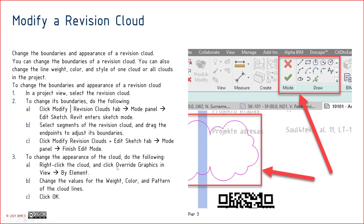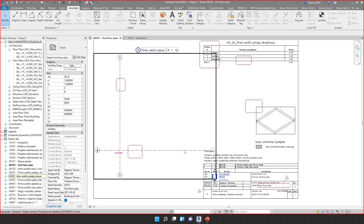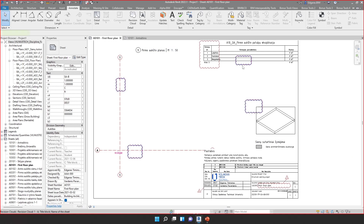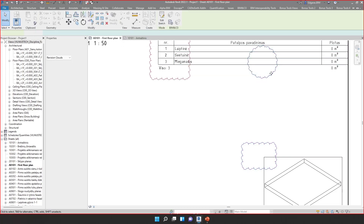Now let's look at how to modify a revision cloud. You have two options. You can modify by editing the shape and design of the revision cloud. In Revit, I can double-click on the revision cloud and change the shape, or draw additional revision shapes, then click Finish and the shape is changed.